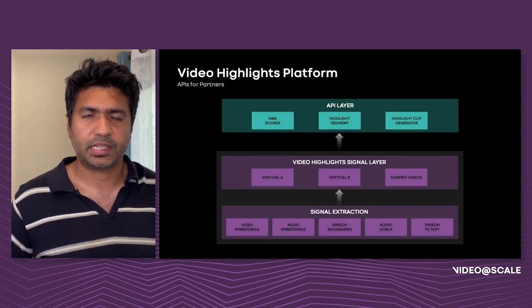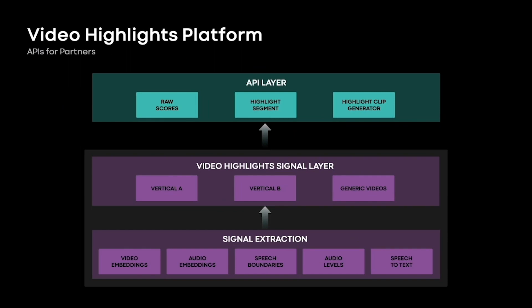At a high level, our system design looks like this. At the lowest level, we have various signals generated for each segment of a video, used as inputs to various models. In some cases, we can infer the class of videos based on content producer-provided tags, video classification model predictions, or the theme of the content producers. We can use this information to channel the video to specific models best suited for its vertical, with the generic model as a default. This is the video highlight signal layer. Finally, we have the client-facing API where clients can read raw scores, ask for highlight segment information after post-processing, or directly ask for the video preview itself.